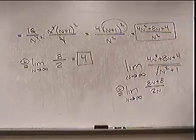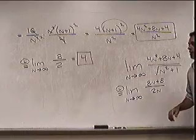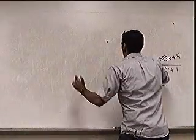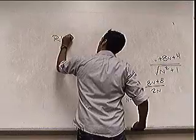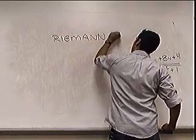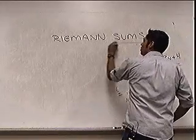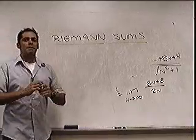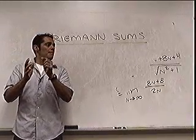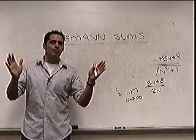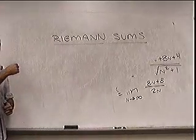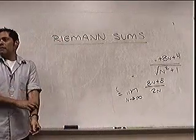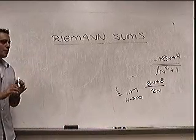This whole thing I've done is called Riemann sums, named after the mathematician Riemann. He figured out a way of finding areas under curves by adding up a bunch of rectangles and then using an infinite number of them to find the exact area.